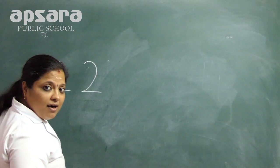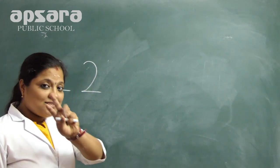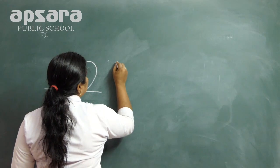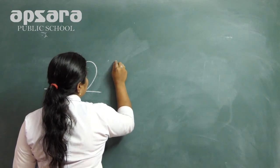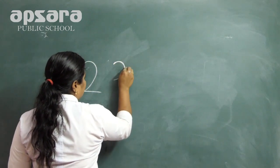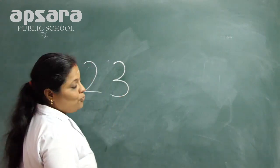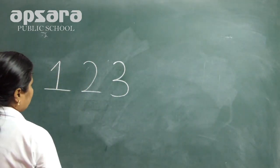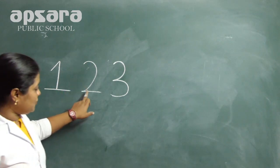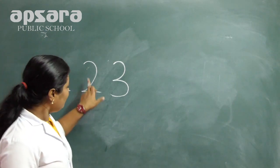What's the next number? What comes after number two? Three. Yes. Which number is this? Three. Now, how many numbers are there? One, two, three. Tell me, children — one, two, three.